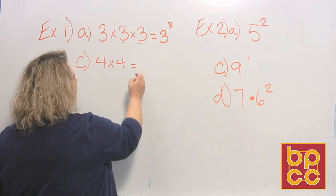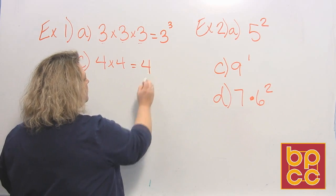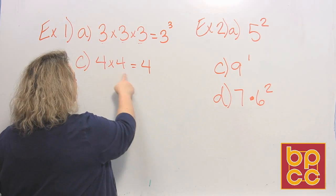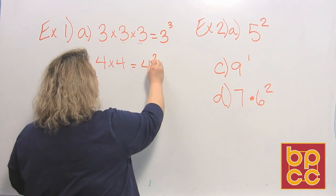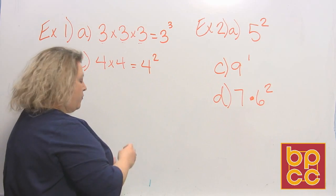The bottom one says I'm going to use the number four, which is my base, and I'm going to multiply it to itself two times. So that would be four to the second power.